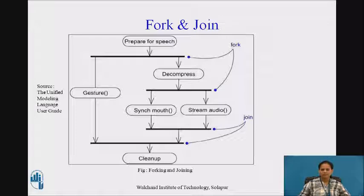As figure shows, a fork represents the splitting of a single flow of control into two or more concurrent flows of control. A fork may have one incoming transition and two or more outgoing transitions, each of which represents an independent flow of control. Below the fork, the activities associated with each of these paths continues in parallel. As figure shows, prepare for speech is forked into gesture and decompress.